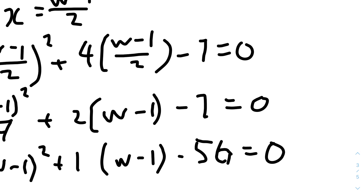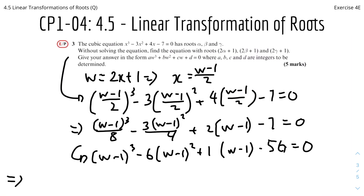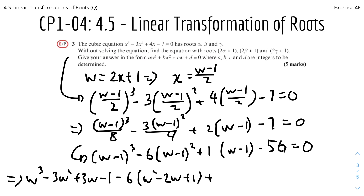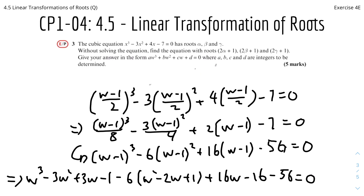Now we expand all the brackets: w cubed minus 3w squared plus 3w minus 1, minus 6 times (w squared minus 2w plus 1), plus 16w minus 16, minus 56 equals 0. Simplifying everything, we get the final equation: w cubed minus 9w squared plus 31w minus 79 equals 0. And that's the final answer.